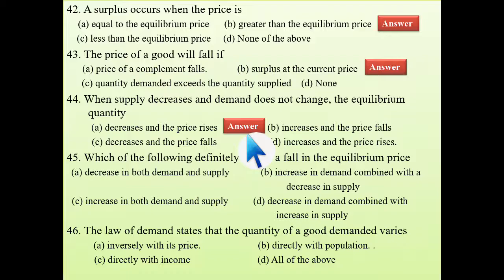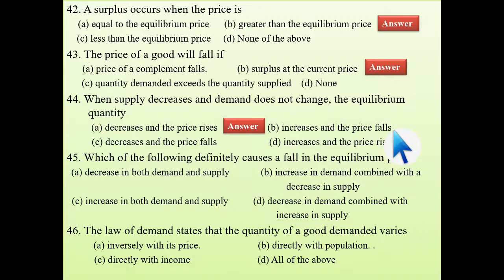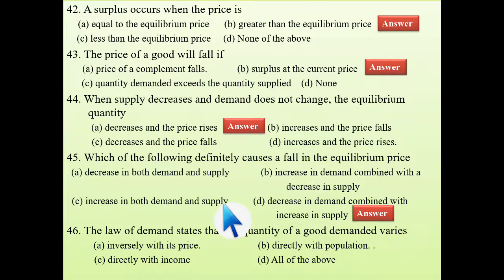Next: which of the following definitely causes a fall in equilibrium price? The answer is a decrease in demand combined with an increase in supply. This is the condition that will cause a fall in equilibrium price. Draw the diagram if you face any difficulty; mention it in the comment box.